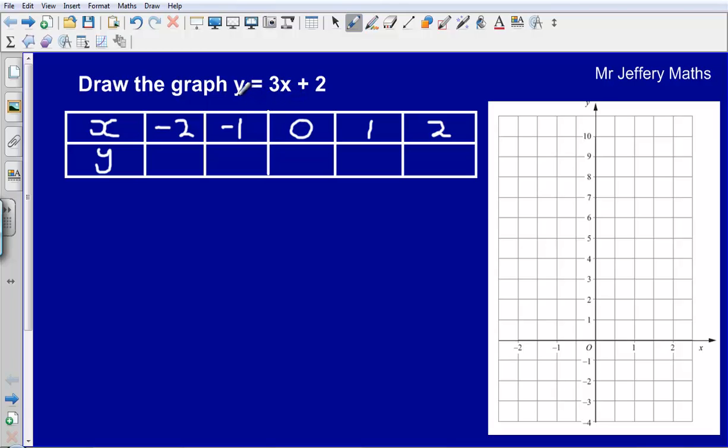What it is saying is that the value for y is equal to 3 times by the value for x add on 2. So really all we are going to be doing with each of these x values is simply times by 3 and add on 2.